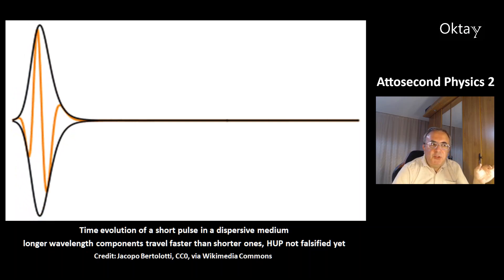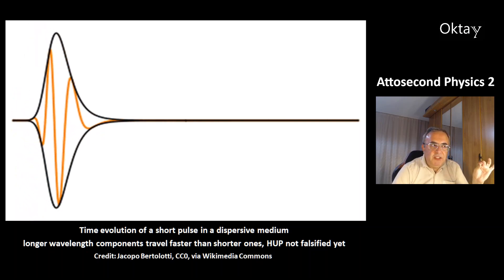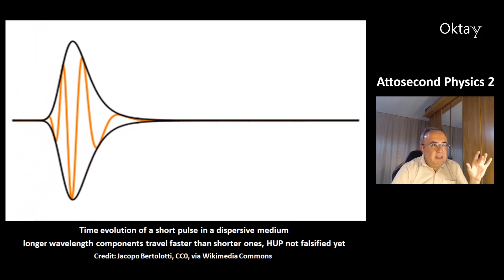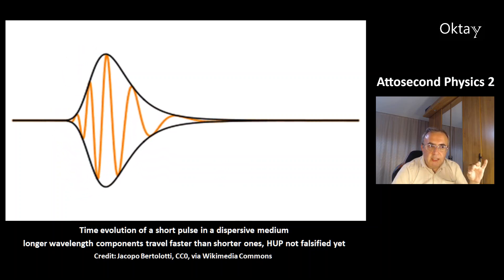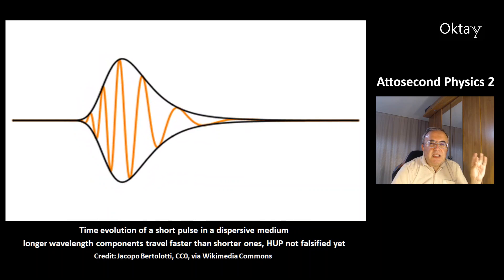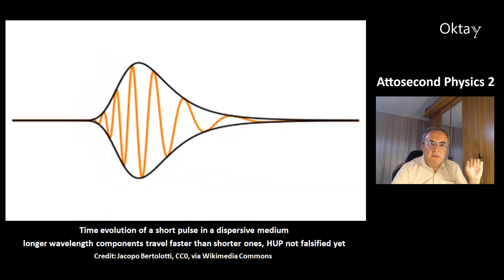This is a time evolution of a short pulse in a dispersive medium. You can see the longer wavelength components that travel faster than the shorter ones. And the Heisenberg uncertainty principle is not falsified yet.